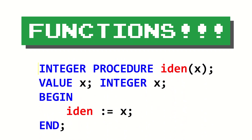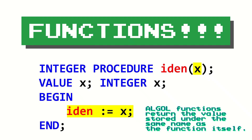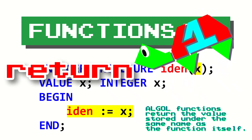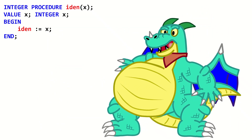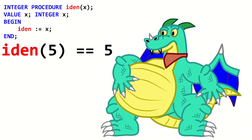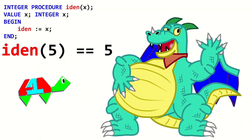ALGOL also has the ability to use functions. This function here, written as an integer procedure, takes in the parameter of an integer x passed by value. To return the value from an ALGOL function, you set the function's value as if it were a variable. This is kind of hard to see in the middle of a function, and I guess it's why the return keyword was added in C. The function here just seems to return whatever was put into it — yes, that's exactly what it does.